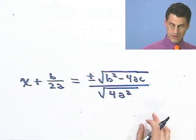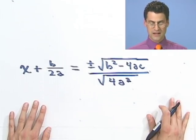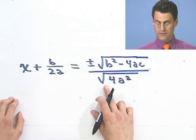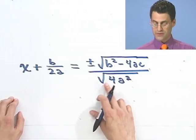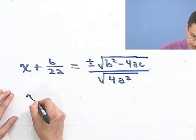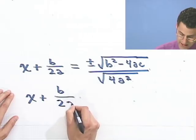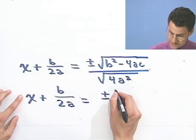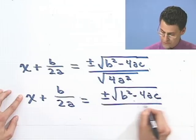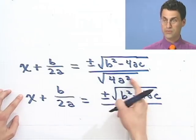Okay? And now what do I do? Well, now what I do is I realize that the bottom actually can be written out. I can take the square root of that. The square root of 4 is 2. The square root of a squared is just a. So in fact, what I see here is x plus b over 2a equals plus or minus the square root of b squared minus 4ac and all over just 2a. That's the square root of this.